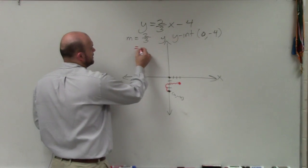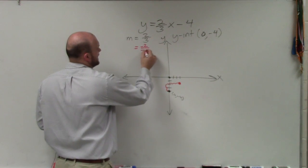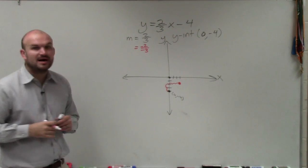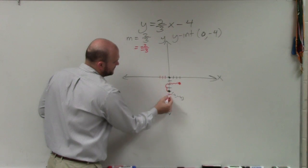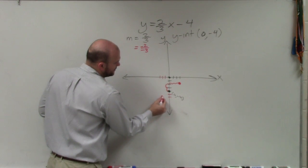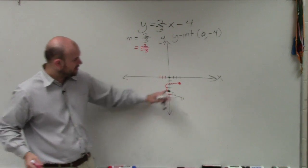Also, please remember that negative 2 over negative 3 is the same thing as a positive 2 thirds. So you could go down two to the left three. And that would create a point as well. You can see that they're all on the same line.